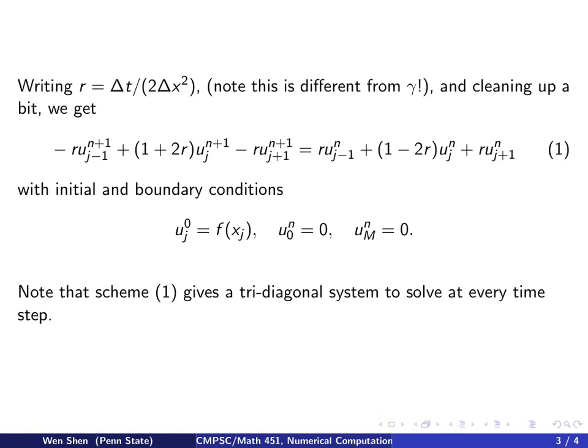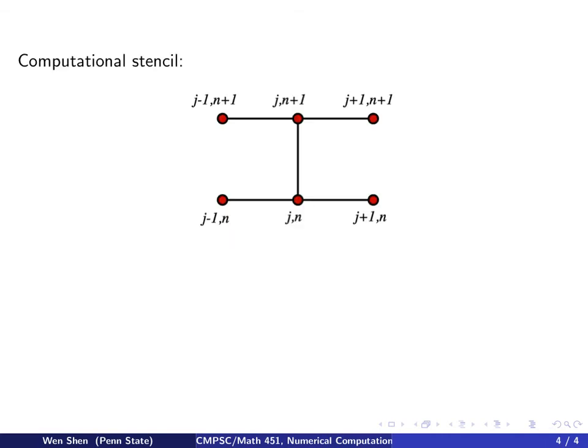So take a closer look at the scheme labeled by equation number 1. We see that everything at N is given at that step, and we are wishing to compute unknowns at level N plus 1. So each equation now involves three unknowns. Write it out as a system, we would get a tri-diagonal system. And that has to be solved at every time step.